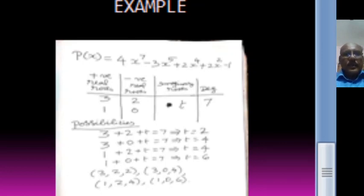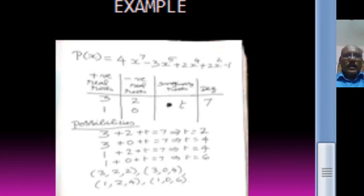So the combination 3 positive, 2 negative, 2 imaginary roots is one possibility. Similarly, there are 4 possibilities in total.